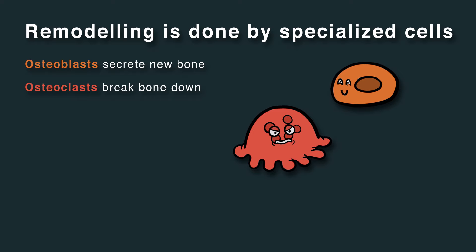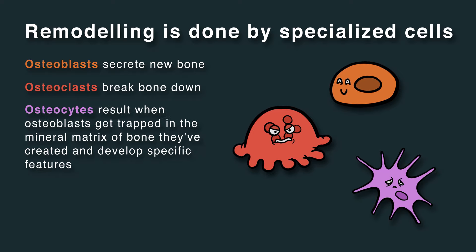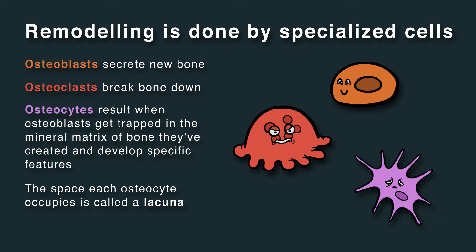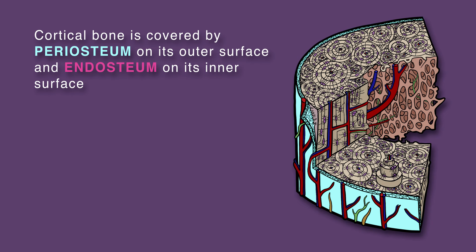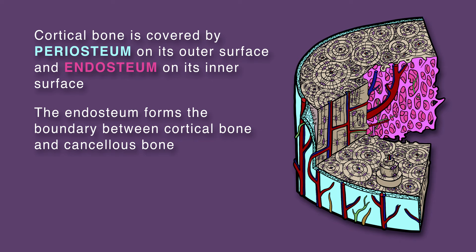In addition, there are cells called osteocytes, which result when osteoblasts get trapped in the mineral matrix of bone they've created and develop specific features. The space each osteocyte occupies is called a lacuna. Osteocytes can send signals which influence the activity of osteoblasts and osteoclasts, and have many other functions. Cortical bone is covered by periosteum on its outer surface and endosteum on its inner surface. The endosteum forms the boundary between cortical bone and cancellous bone.